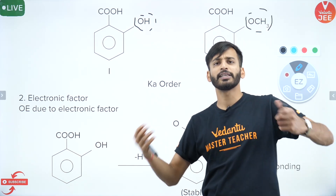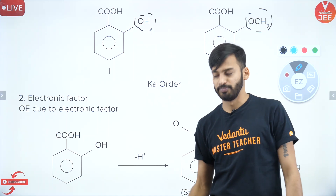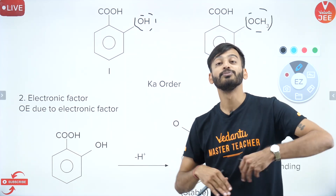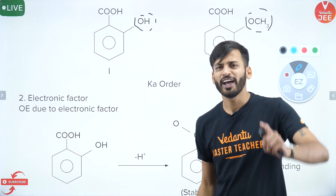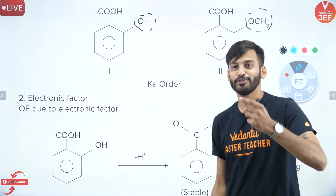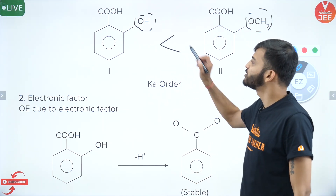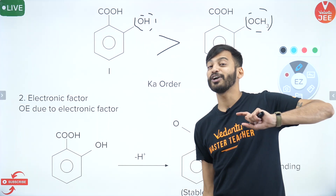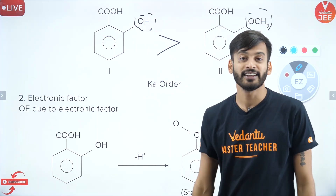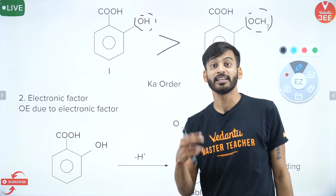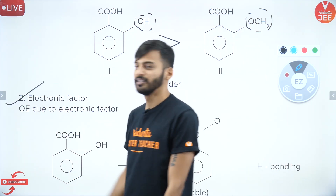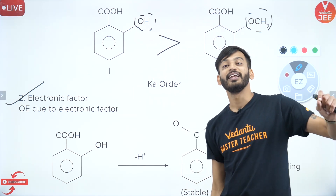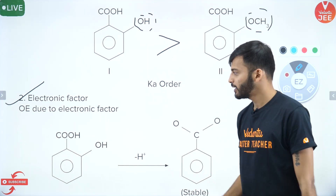Students started thinking: if the group at ortho position is very bulky — a very heavy compound at ortho position — it will cause more repulsion, so ortho effect would be more. So they thought the acidic strength order should follow bulkiness. But to our surprise, acidic strength order was different. Steric inhibition to resonance is not the whole sole criteria for judging acidic strength in aromatic acids. There is another reason: electronic factors.